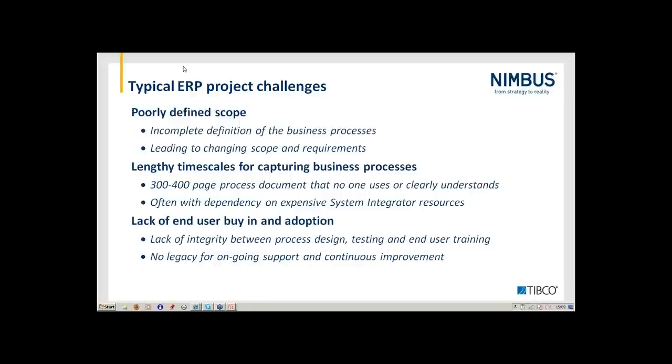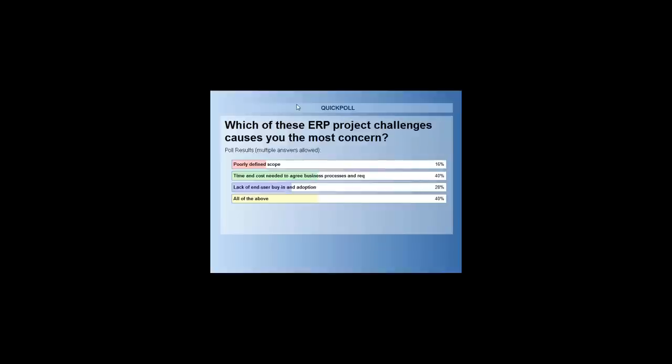Closing the poll in three, two, one. Let's have a look at the results. 76% of you responded to this poll question, thank you very much for that. If we take away 'all of the above,' it's the time and cost needed to agree business processes and requirements that seems to be the biggest challenge. So interesting results there. Back to you please, Kevin. Thank you, Susie — that's extremely interesting to see in a real-time snapshot poll.